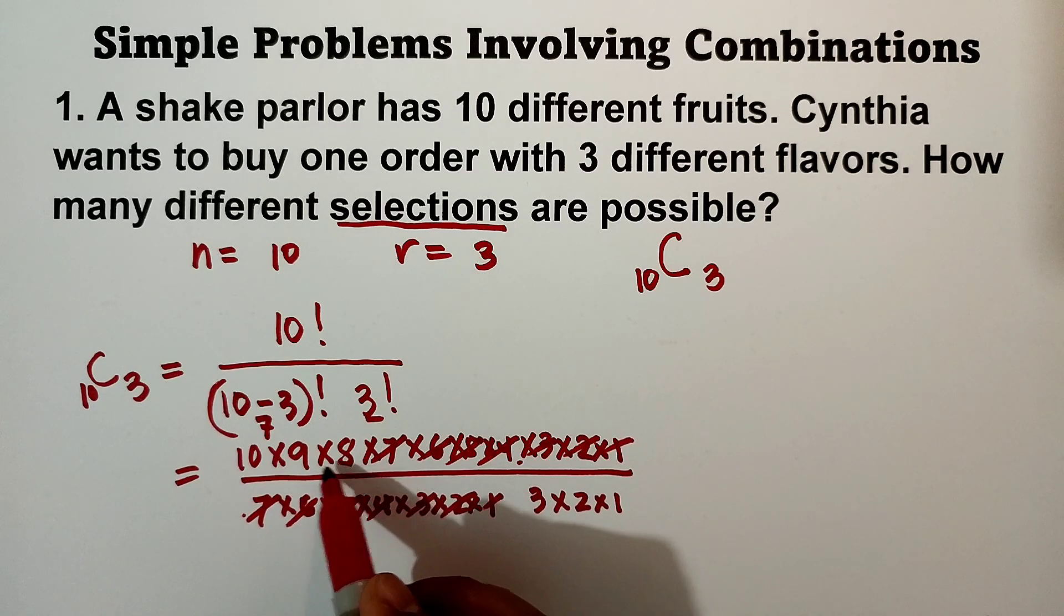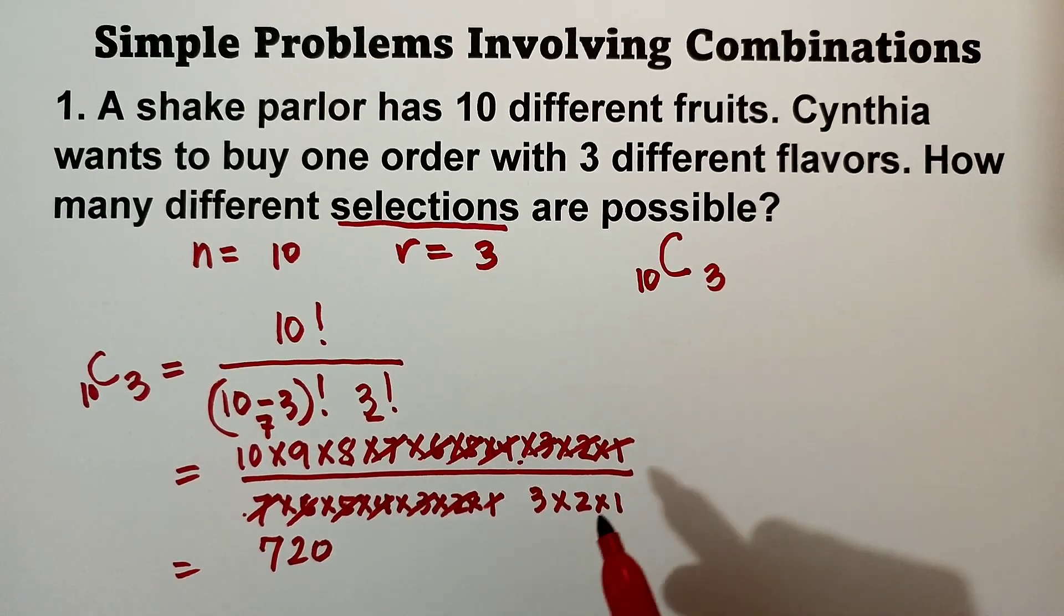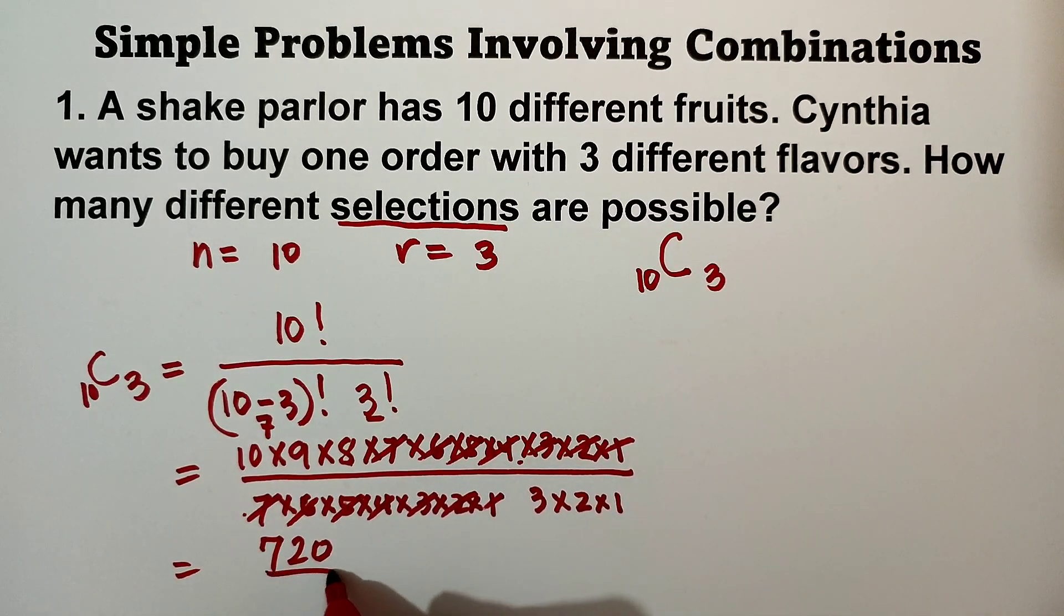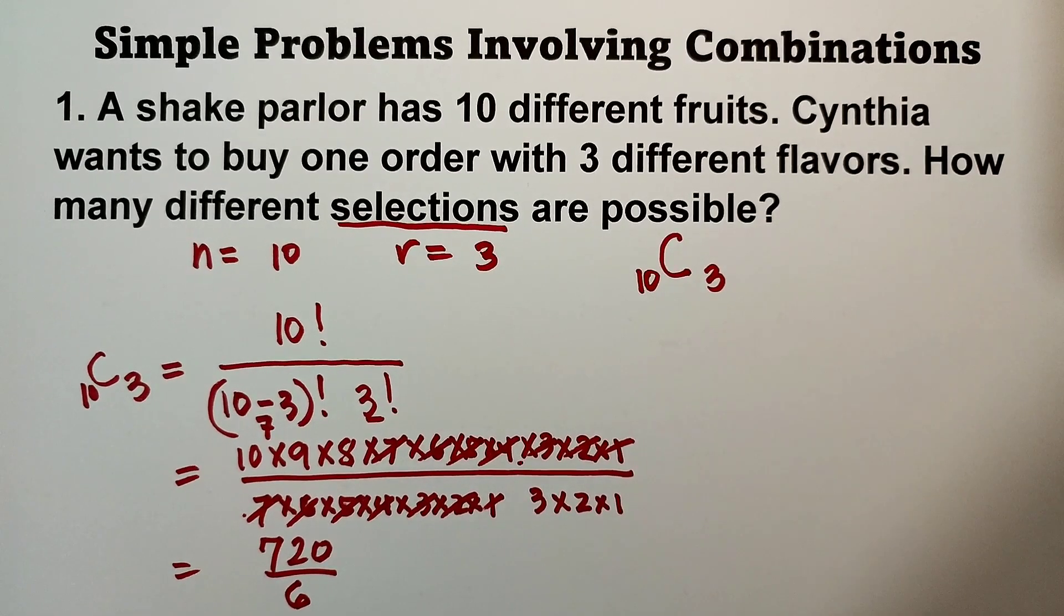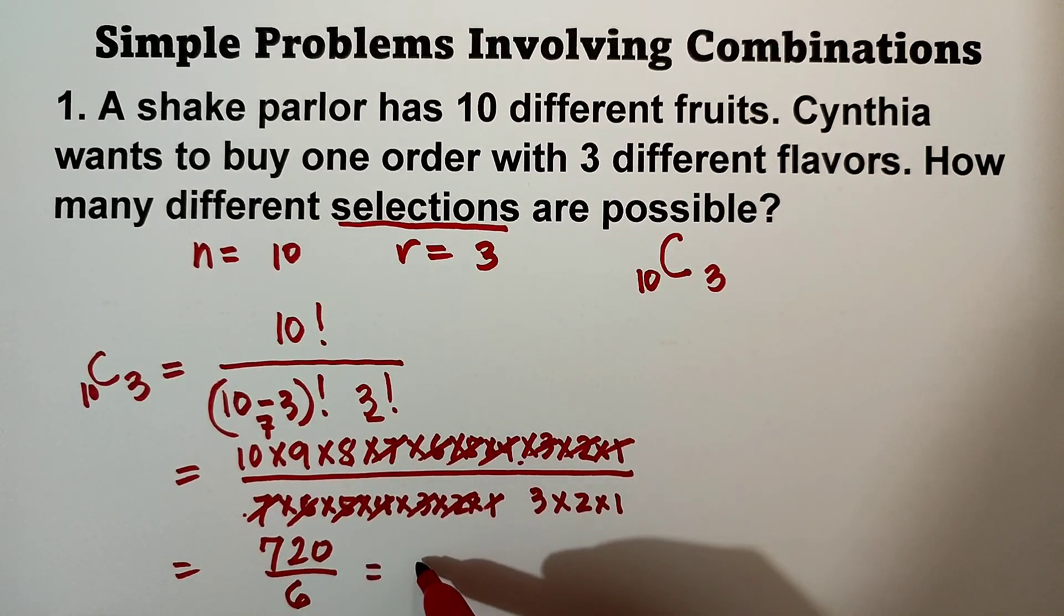So 9 times 8 is 72, times 10 that is 720, and then 3 times 2 times 1 is 6. 720 divided by 6, that is equal to 120.